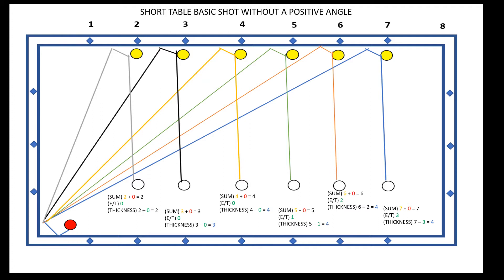For diamonds 5 through 7, your tip increases to accommodate the wider angle. In this image, you will notice that at diamond 5 your tip is 1, at diamond 6 your tip is 2, and at diamond 7 your tip is 3.